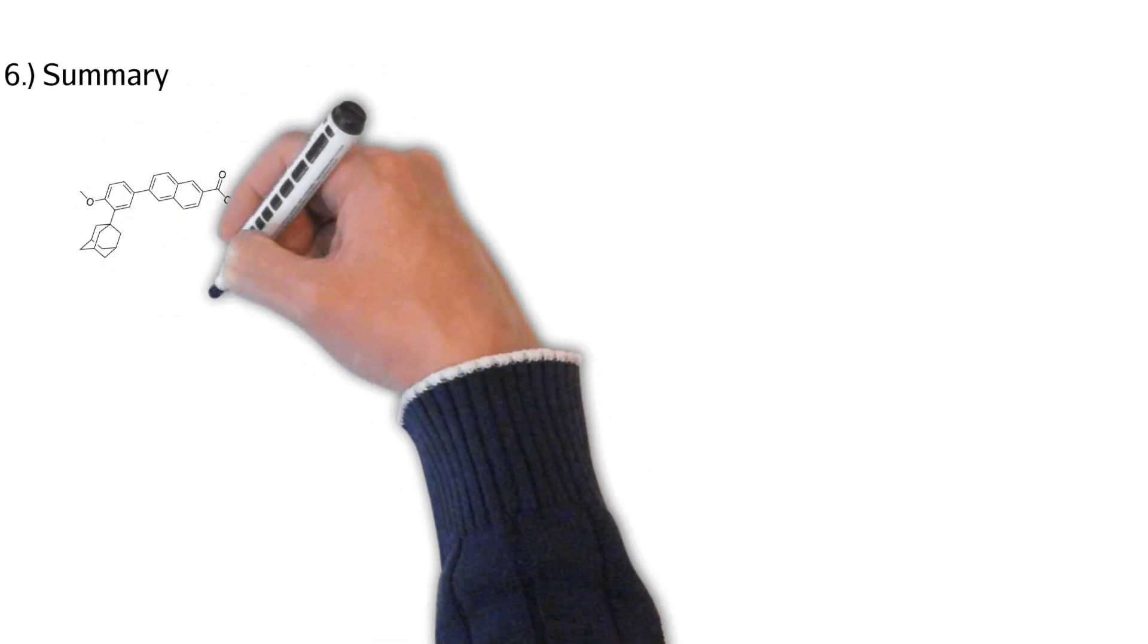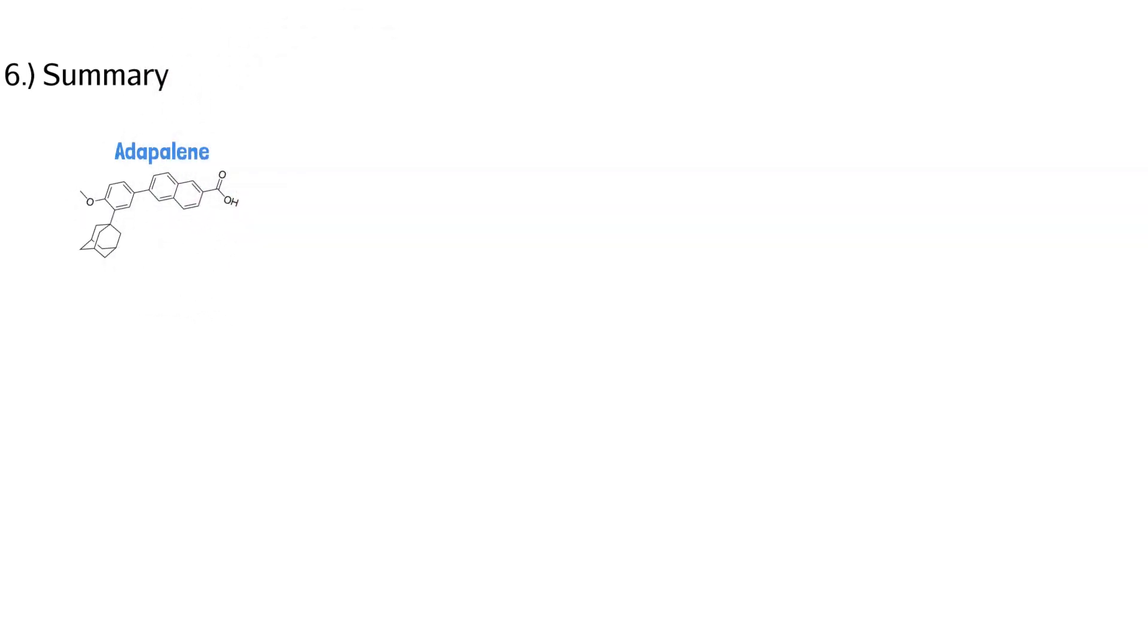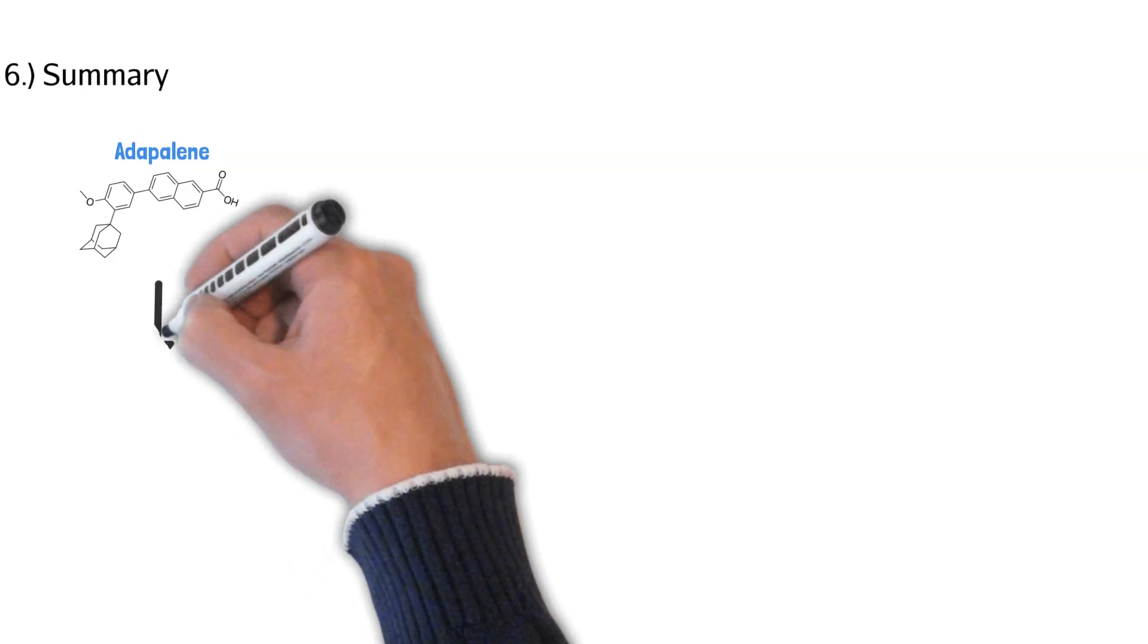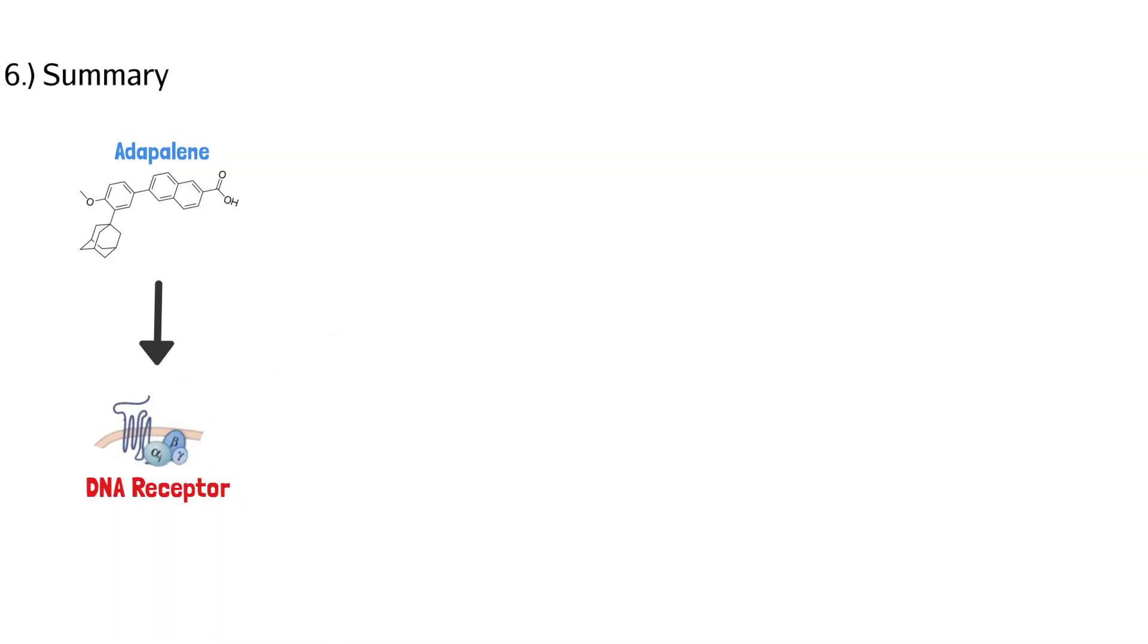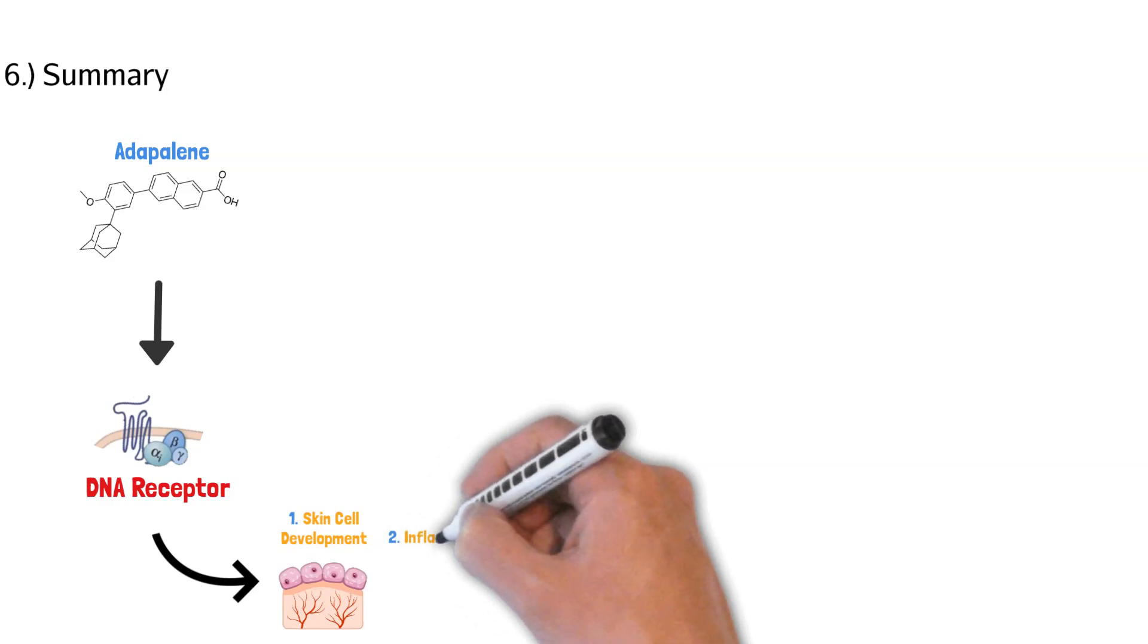Let's do a quick recap to see what we retained. So we said Adapalene, we know it's a retinol structure because it looks like vitamin A. The reason for that is because it can bind to the DNA receptors that are on the skin. And when it does that, we know that it'll help in two ways. One, it helps facilitate skin cell development. And two, it aids in the inflammatory process to reduce inflammation.